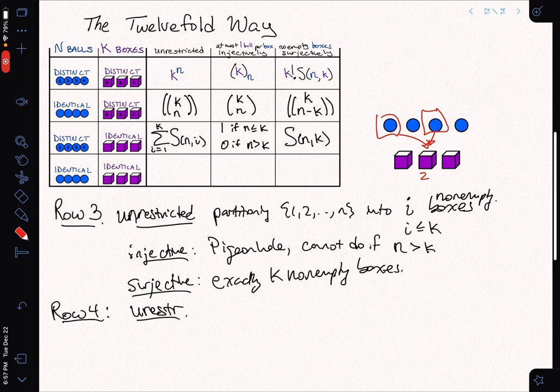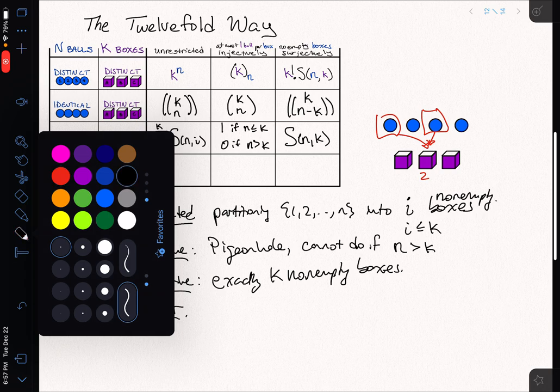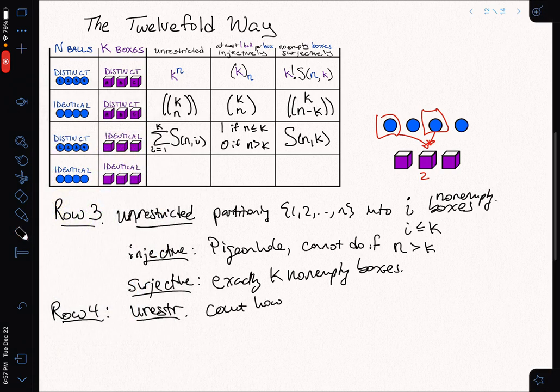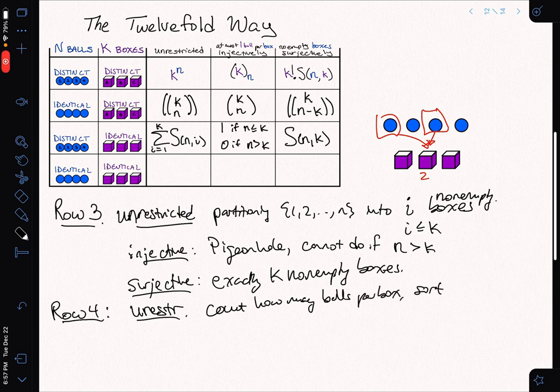So I can think of this as, all I'm doing is I put down how many, so we can count how many balls per box, and then just sort. And that sorting is exactly what a partition does. So this is exactly going to be the sum from i equals one to k of pi of n. So the number of partitions of n into i parts, where i is the number of non-empty boxes.